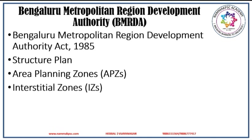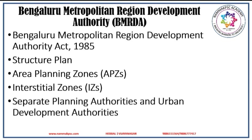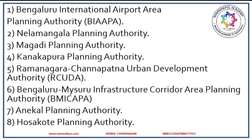The structure plan prepared by BMRDA is in the nature of a broad area development plan for the entire Bengaluru and requires preparation of detailed sector-specific and area-specific plans. Separate planning authorities and urban development authorities have been constituted in this regard under KTCP Act 1961. Here is the list of authorities created for this purpose.